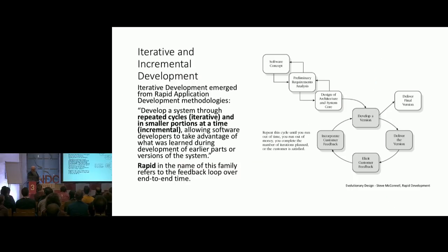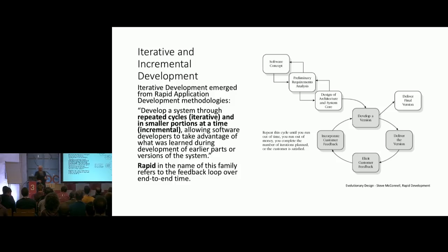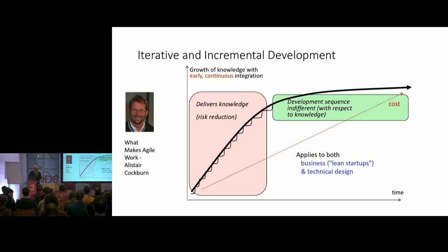Iterative development — rapid application development — is really where most agile approaches come from. You deliver iteratively and incrementally in small chunks of functionality on a regular basis. It's important to be both iterative and incremental — you can't do a whole lot of sprints and not ship until the end; that hasn't helped you. And as Cockburn would describe it, it's a risk reduction strategy: you get knowledge very early in the process about what you're building and are therefore able to reduce risk — if you've gone down the wrong path, you can change course and adjust.